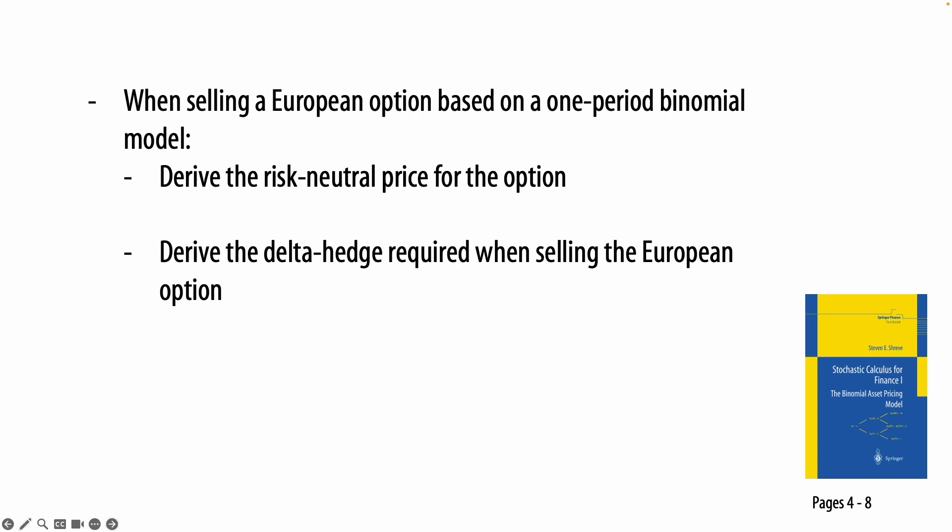In the last video we demonstrated how a risk-neutral price can eliminate arbitrage on a European call option using the one-period binomial model. This video will build further to show you how we can derive two unknowns: the risk-neutral price of the option and the delta for the number of shares we should hold to hedge our position, using Stephen Shreve's Stochastic Calculus for Finance Part One, pages four to eight.